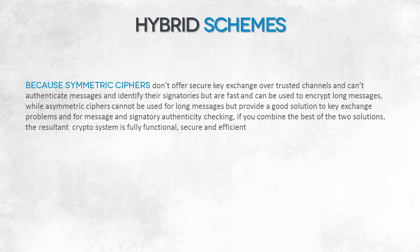Asymmetric ciphers, on the other hand, are not useful for encrypting long messages. They are slow and inefficient, but solve the key exchange problem and provide the ability to prove a sender's identity and establish the authenticity of a message.